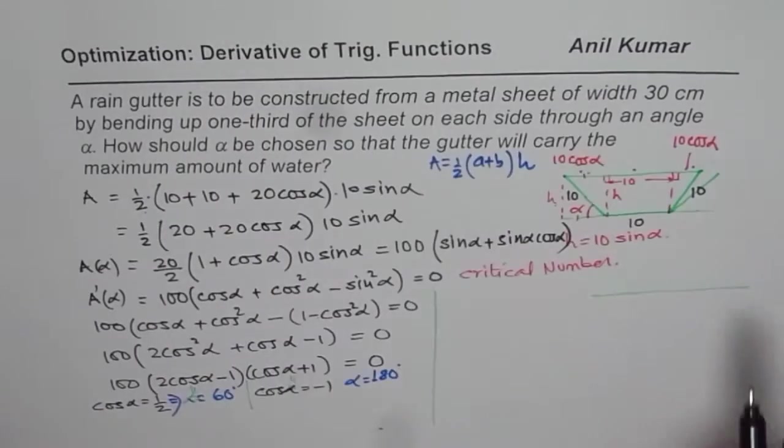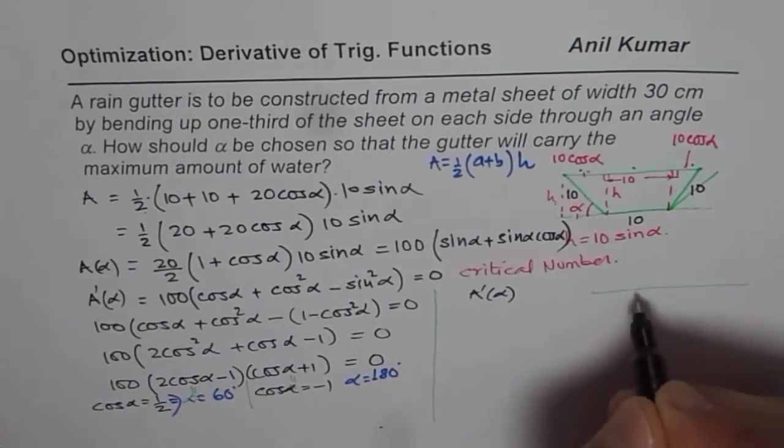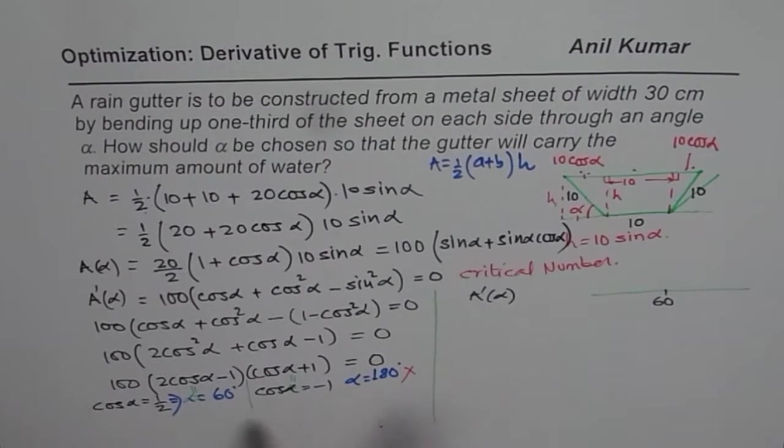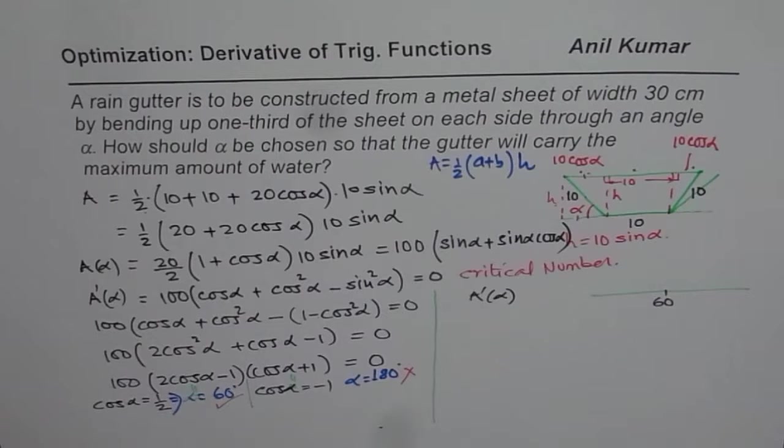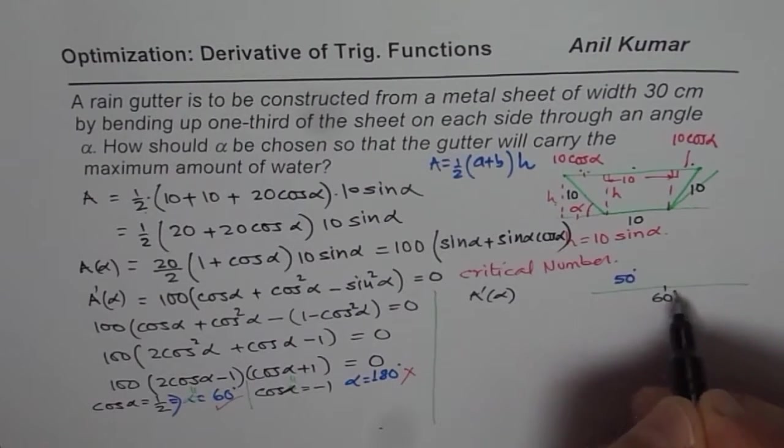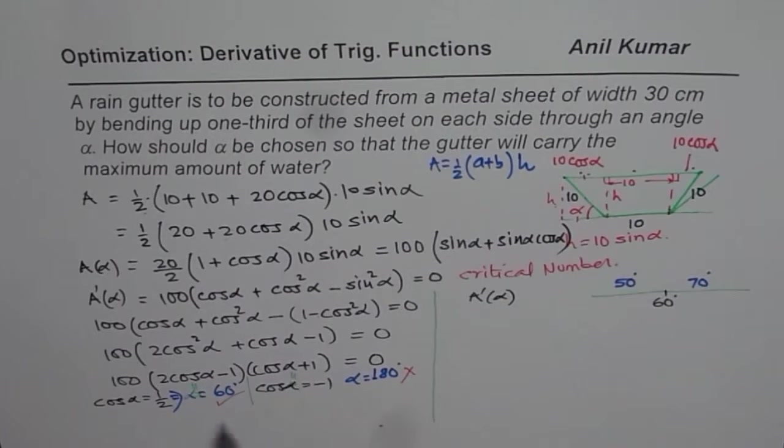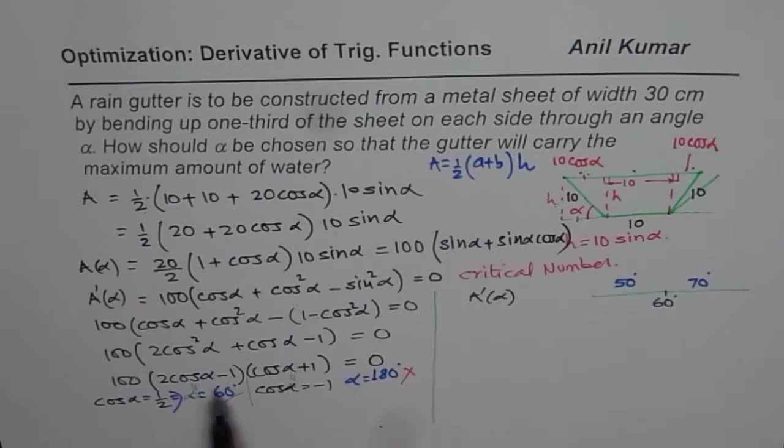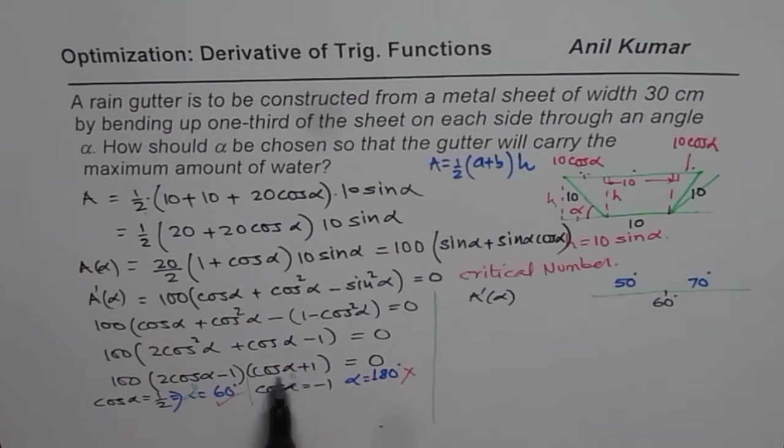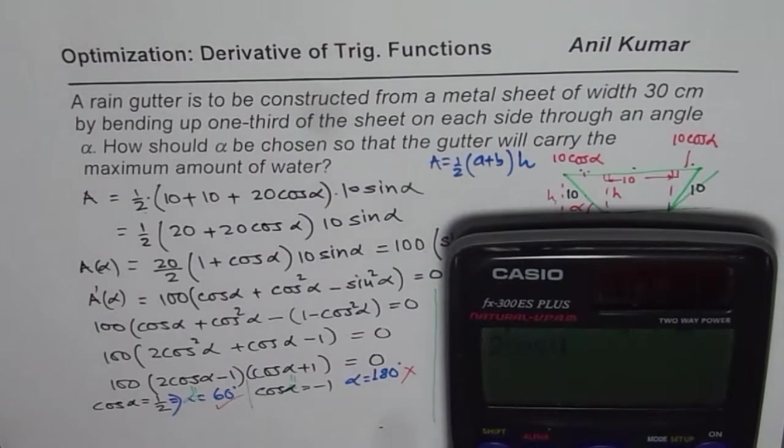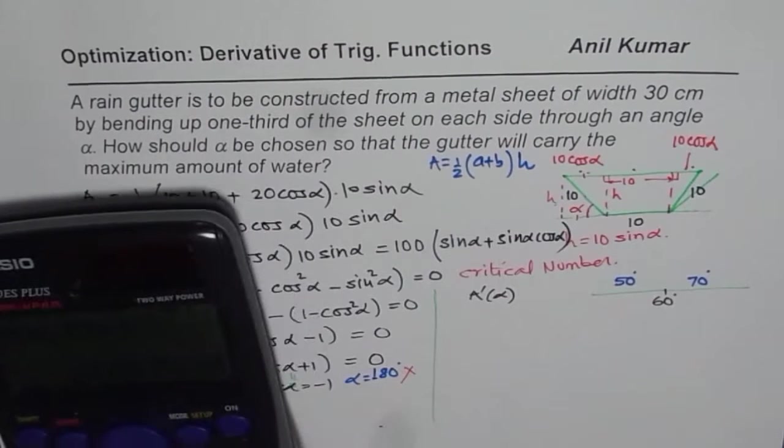To verify, we will analyze the derivative itself. Critical number for us is 60. We will disregard 180 but take this critical number to test. On either side of this critical number, let us take value as 50 degrees and 70 degrees. Cos alpha in quadrant 1 will be positive. Let us test the first quantity itself. If first quantity is positive, the whole expression will be positive. If it is negative, the whole expression will be negative.